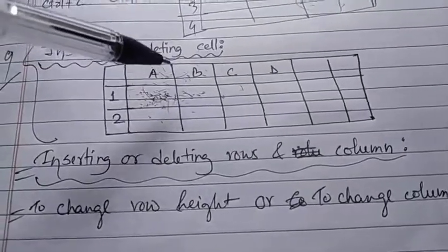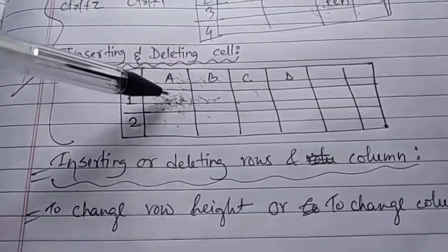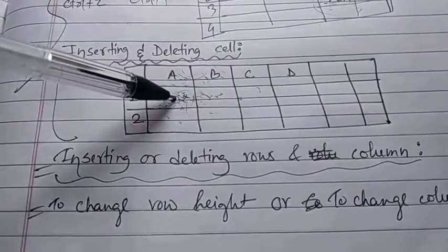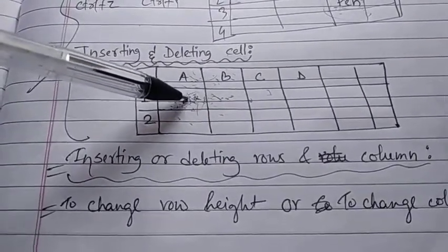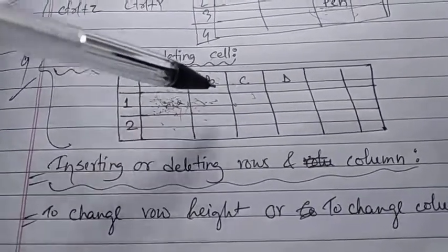Suppose you have to remove row number one. Right-click on the row. From the pop-up menu, click on delete row, then select entire row option. The entire row will be removed.